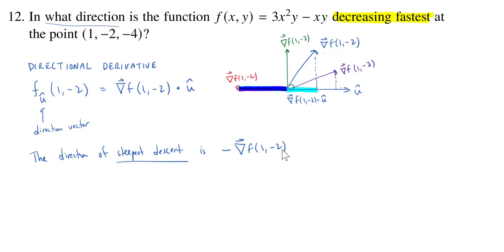Alternatively, if you wanted to see this using the geometric definition of the dot product, you would know that this dot product is equal to the length of the gradient times the length of this vector U, which of course that's going to be one, times the cosine of the angle between the gradient at (1, negative 2) and U. Now, if we want this product to be as small as possible, the gradient doesn't change, this is a one. The only thing that can change is this cosine.